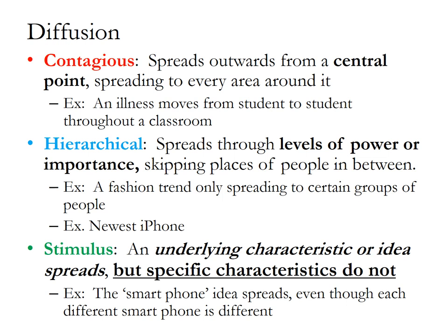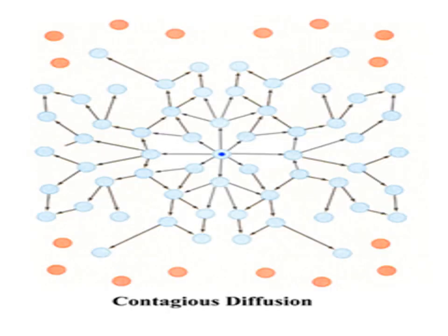The last type is stimulus diffusion, and this is probably the one students get most confused on. It's the idea that an underlying characteristic or idea spreads, but not the specific thing itself. Now, this is a visual representation of contagious diffusion — you have that center point, and it just spreads from there, whether it be a really catchy song or some type of sickness. Everybody can potentially have this idea diffused to them.